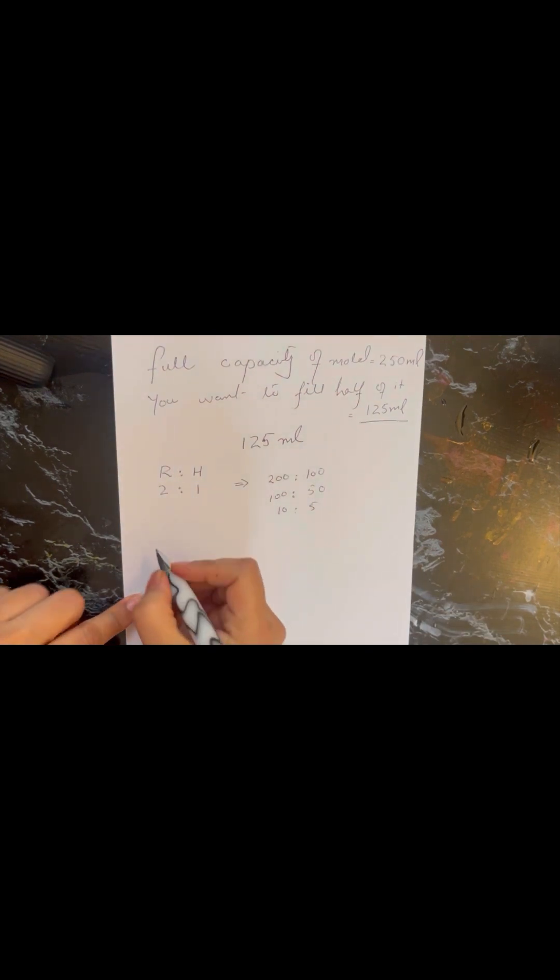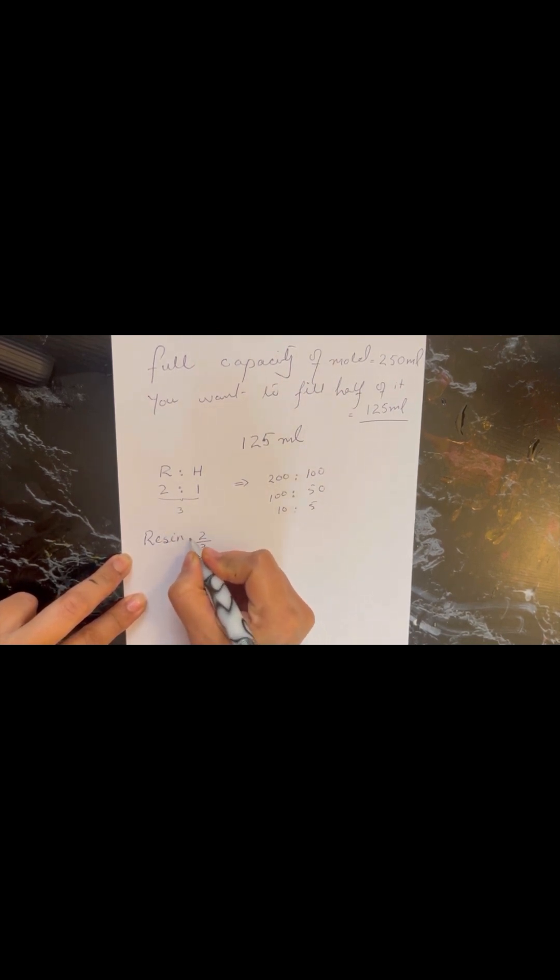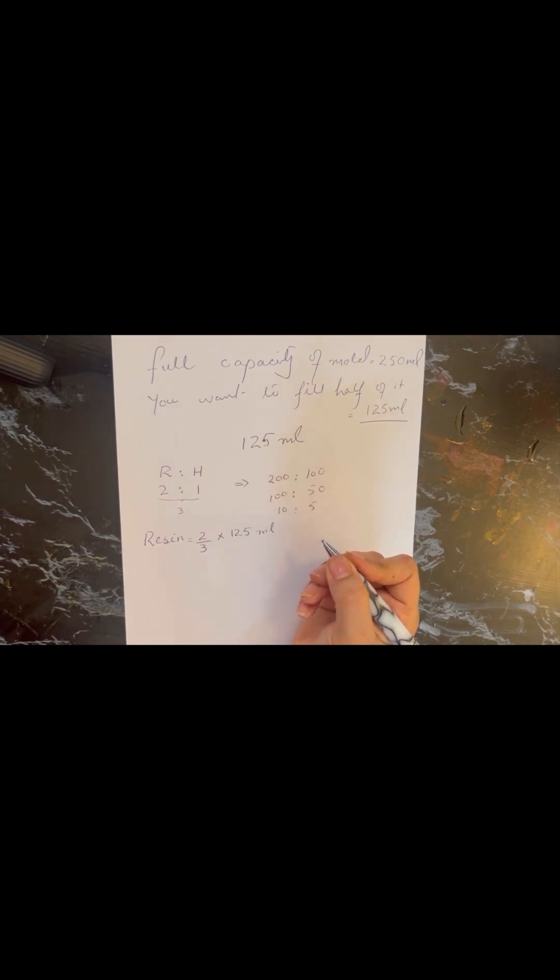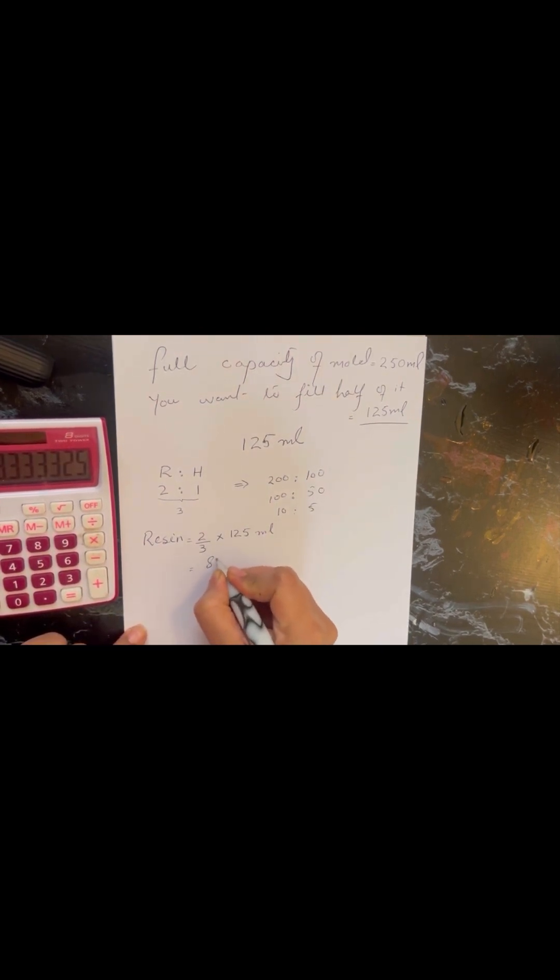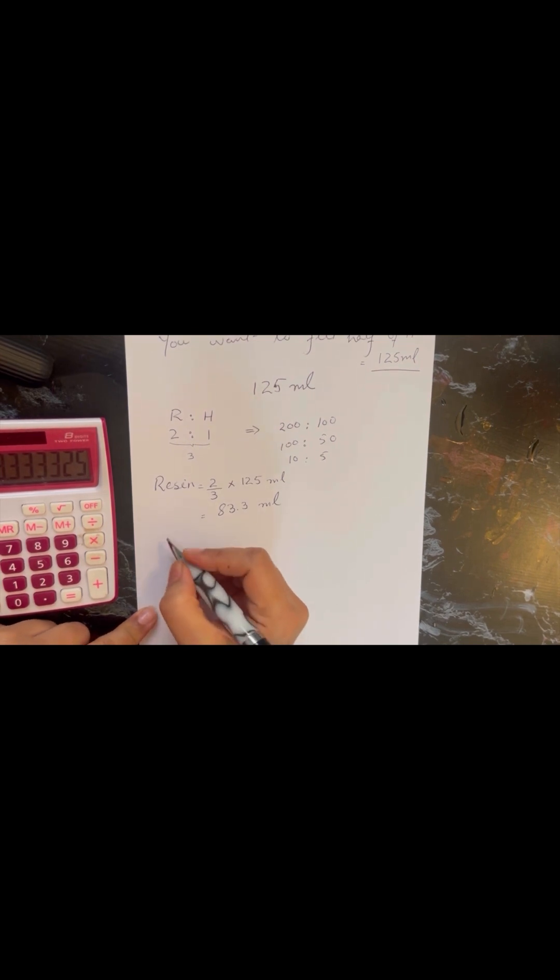Now what we have to do is for resin we will take part two since it is two out of three. So we will write 2 in the numerator and 3 in the denominator, and then we will multiply it with 125 ml which is the total volume that we need to pour in. By doing simple calculation you can easily find its value and you can always round it up or round it down according to the number that falls after decimal place. So it is 83.3 ml, I will use 83 as my rounded off figure.